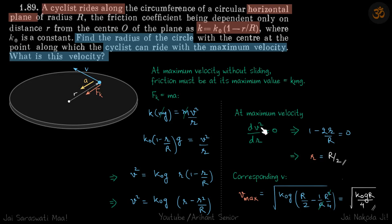We'll do dv²/dr and we'll see that it occurs at r = R/2. At r = R/2, the cyclist can travel in circular rounds with maximum velocity, and the corresponding velocity is found by putting this value of r.